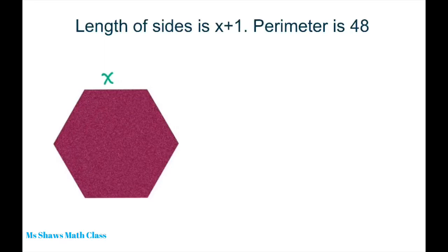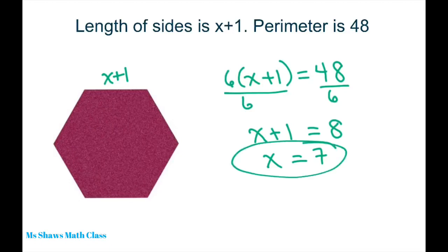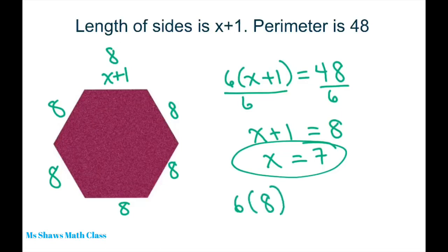Same thing for this one — X plus 1. This is a hexagon, so it has 6 sides. Divide both sides by 6 using the division property. You get X plus 1 equals 8. Therefore X is 7 because 7 plus 1 is 8. So we solved for X and each of the sides is 8. And 6 times 8 equals 48.